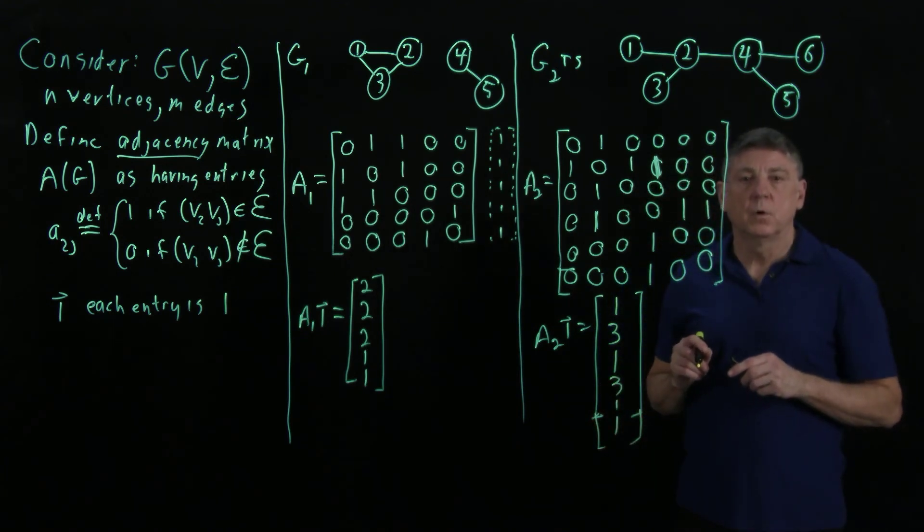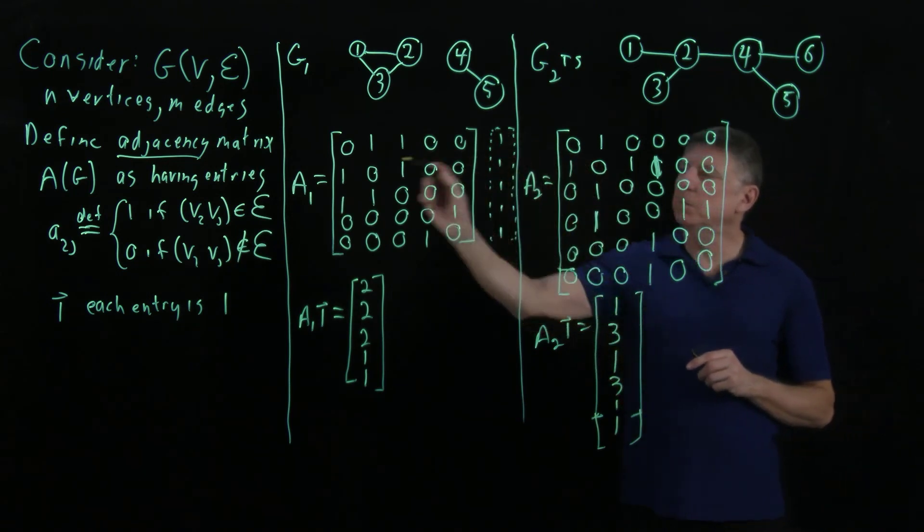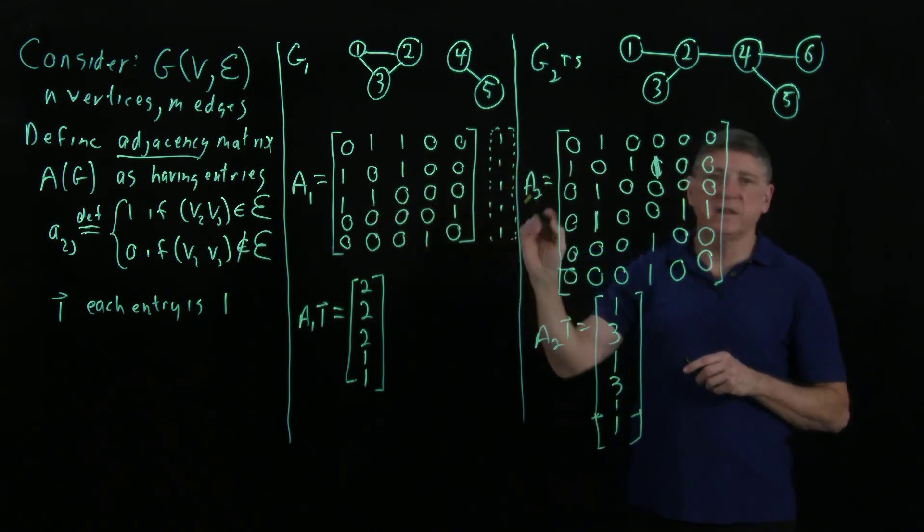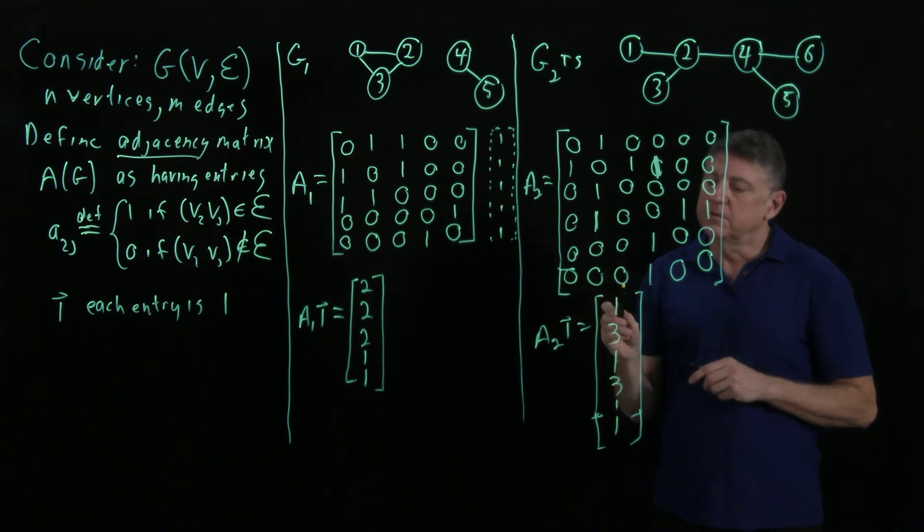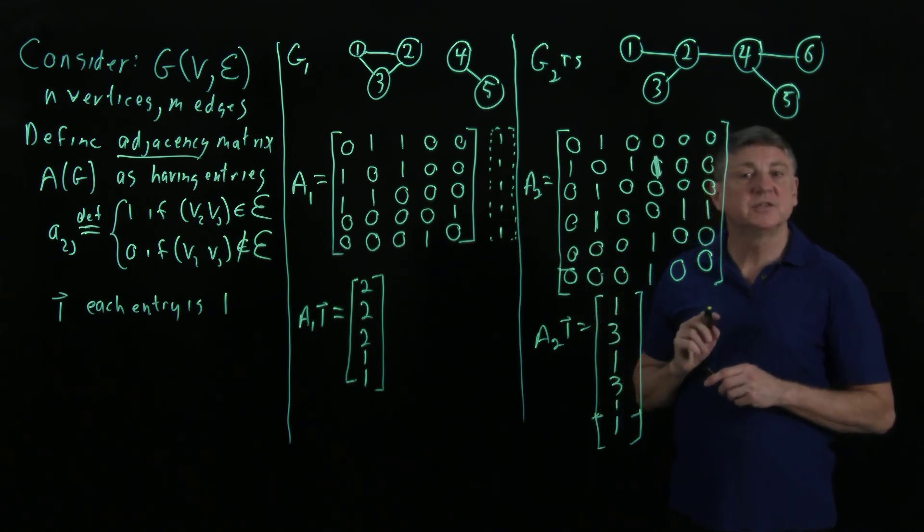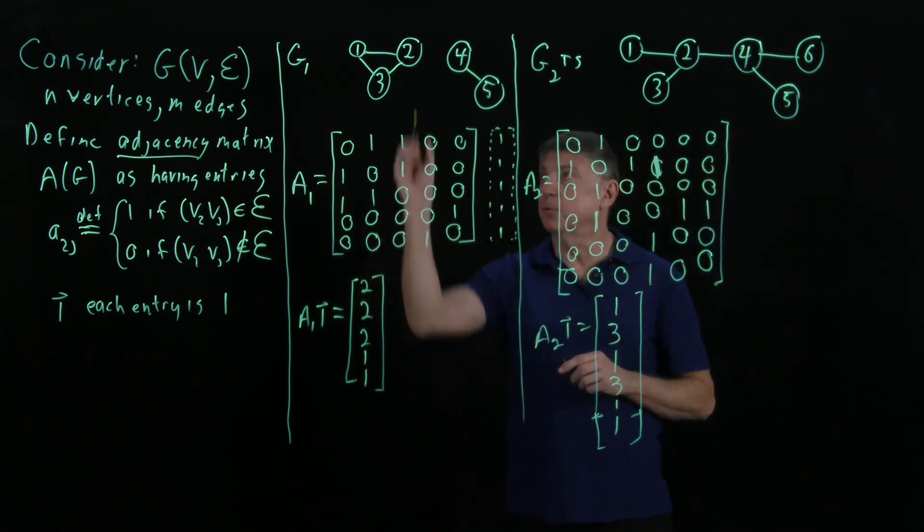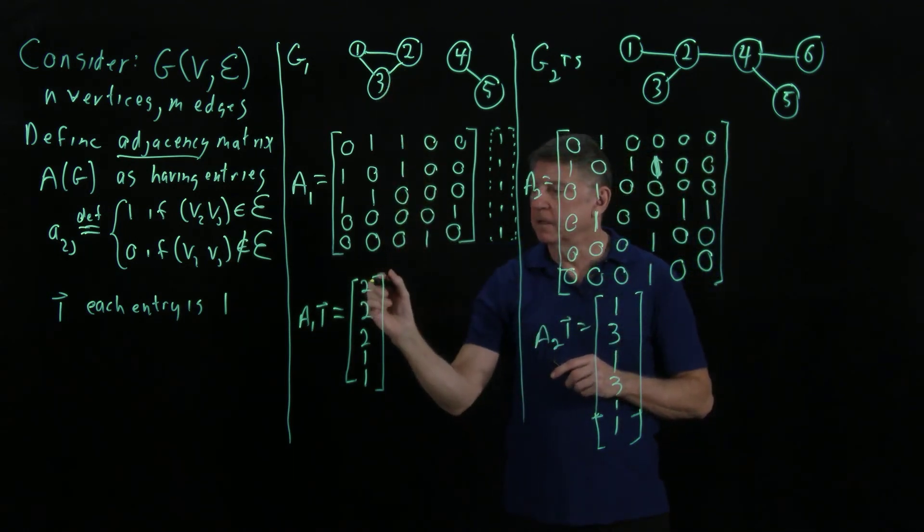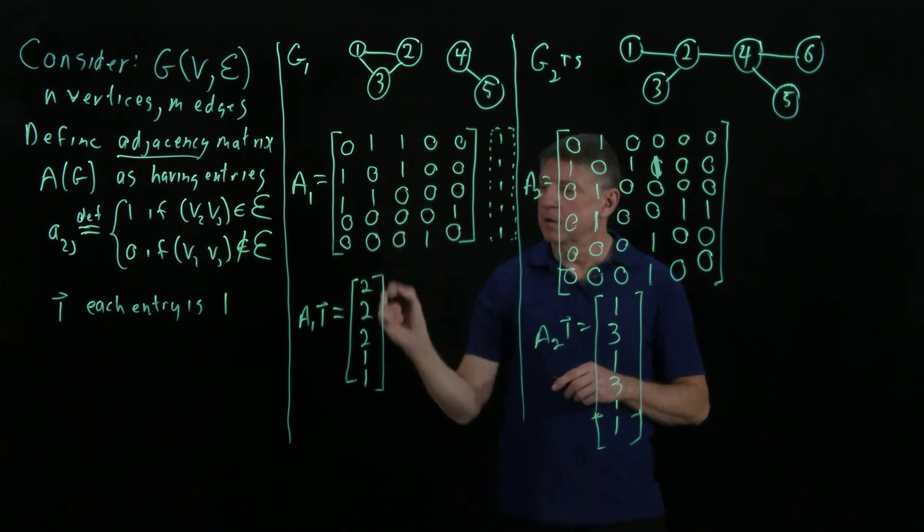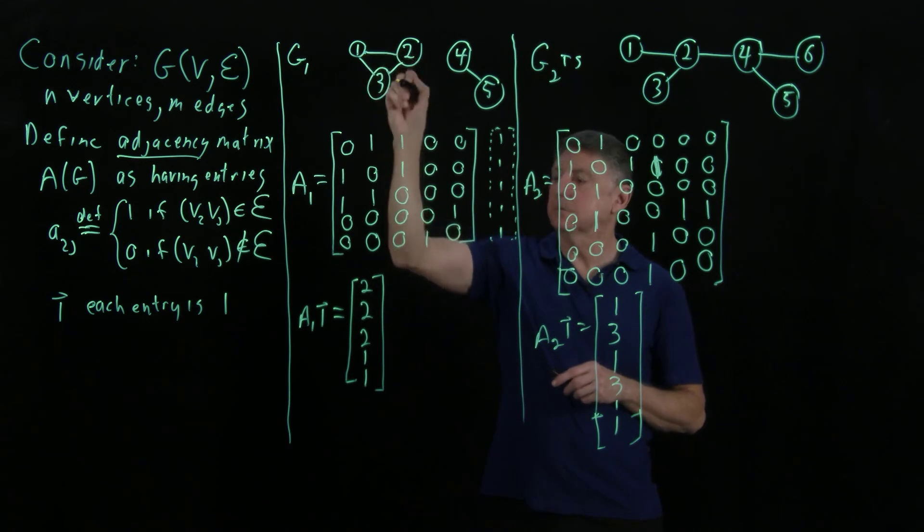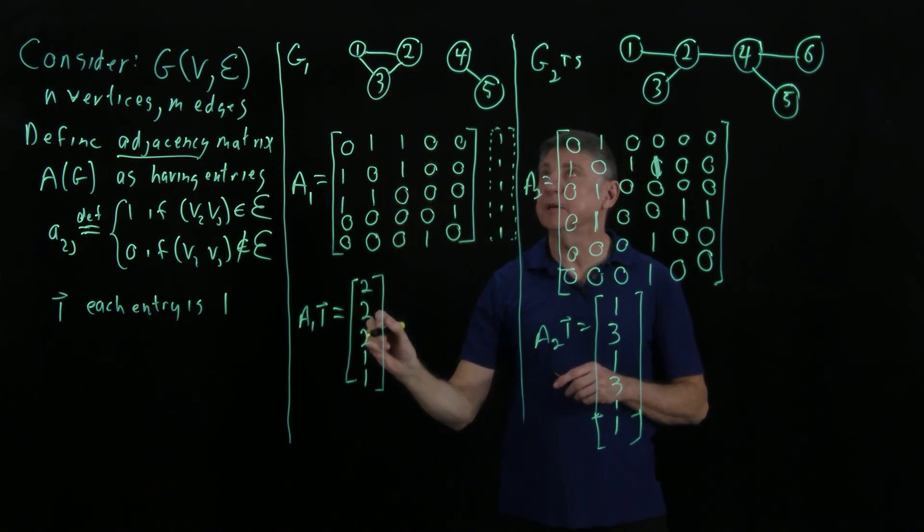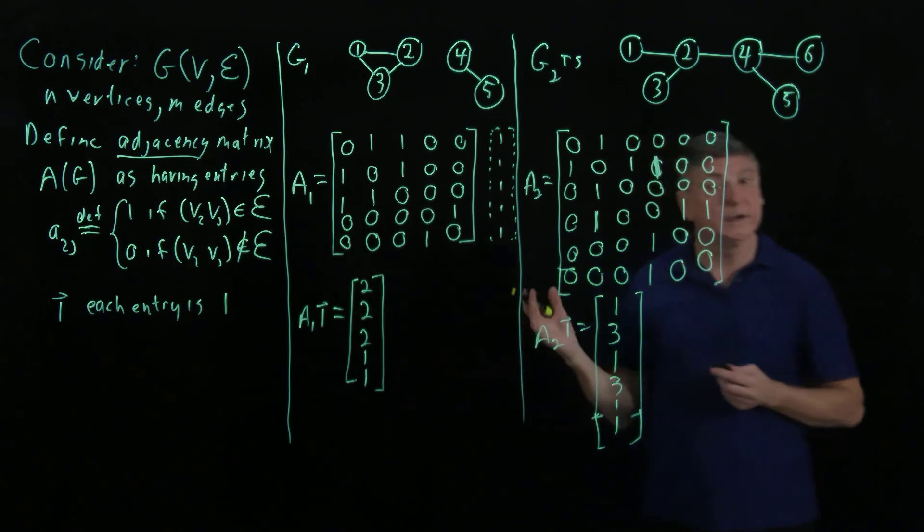So, what we can conclude from this is that if we multiply the adjacency matrix by the ones vector, the vector that results is the degrees of the vertices of the graph. Let's check that. What this says is that for this graph, vertex one has degree two, vertex two has degree two, vertex three has degree two, vertices four and five have degree one.